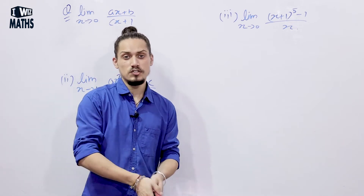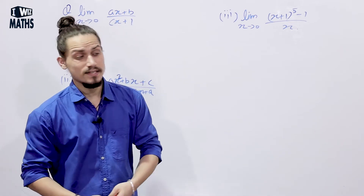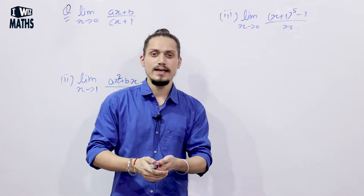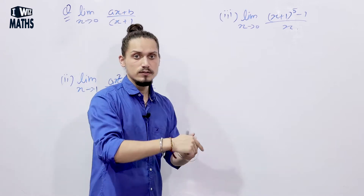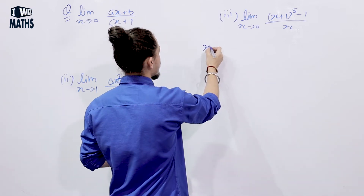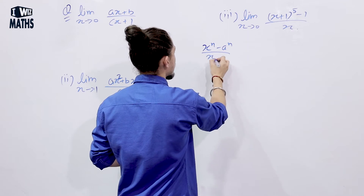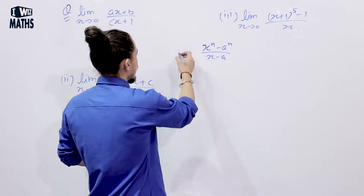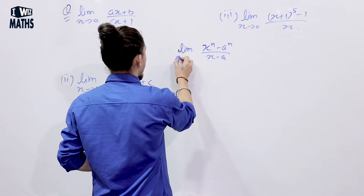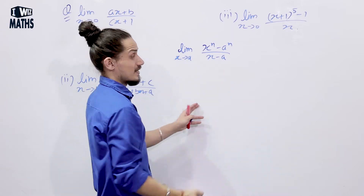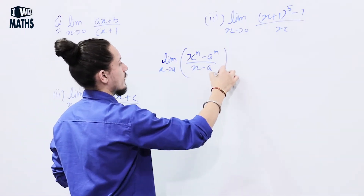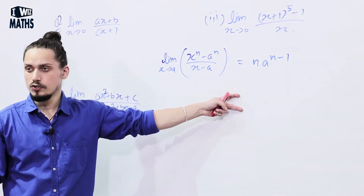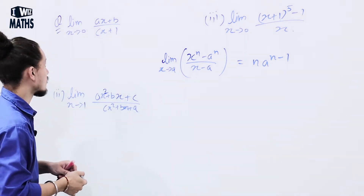Now we have yet to come across a function which leads to 0/0 form. If a function leads to 0/0, we substitute its values. And if we can reduce the function to the form (xⁿ - aⁿ) / (x - a), then its limit as x approaches 'a' will be equal to n × a^(n-1). This is an expression and formula you should remember.